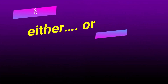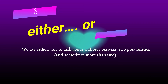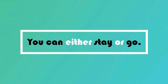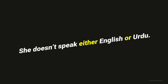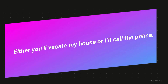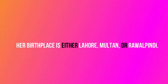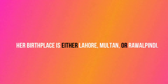Number 6: Either...or. We use 'either...or' to talk about a choice between two possibilities, and sometimes more than two. For example: You can either stay or go. She doesn't speak either English or Urdu. Either you will vacate my house or I'll call the police. The hub place is either Lahore, Multan, or Rawalpindi.